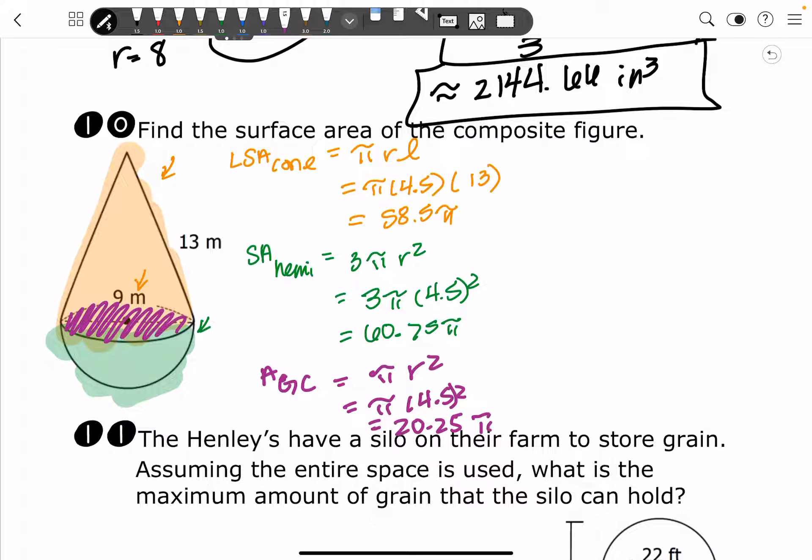So what we're going to end up doing is we're going to add up the orange and the green. And then we're going to subtract that great circle. And that'll give us our exact surface area right there. So 58.5 plus 60.75 minus 20.25. And that gets us 99 pi meters squared. That's our exact answer.